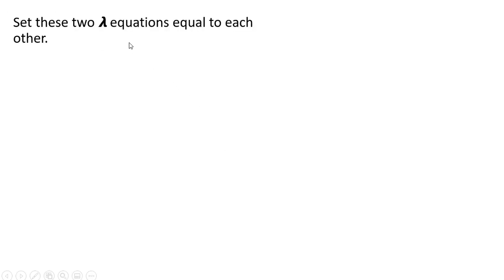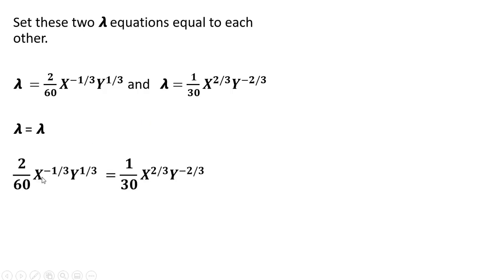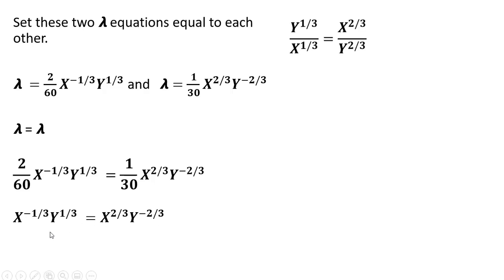Next we're going to set those two lambda equations equal to one another. Here are our lambda equations from the first-order conditions. Setting lambda equal to lambda, we're going to simplify and solve for x. Multiplying through by 30, then following the rules of exponents — moving x to the minus one-third down into the denominator and doing a similar thing on the right-hand side — we can cross-multiply. Y to the one-third times y to the two-thirds is y, and x to the one-third times x to the two-thirds is x. So we get the nice result: x equals y, or y equals x.